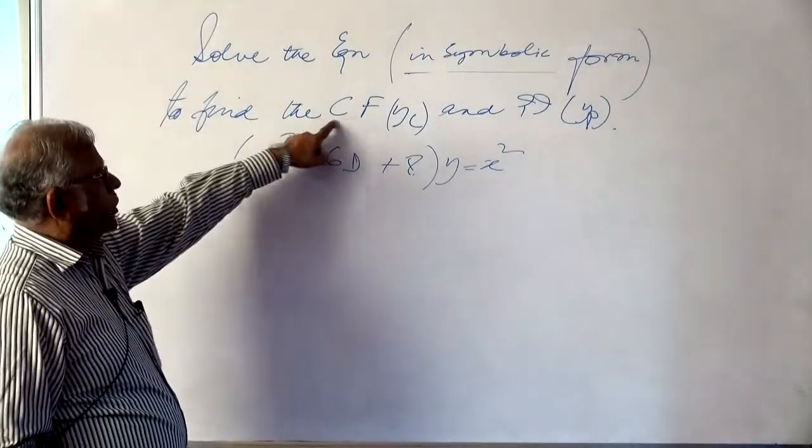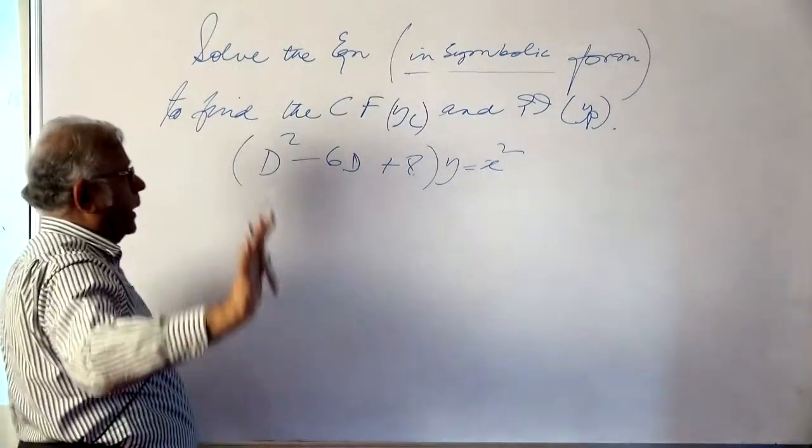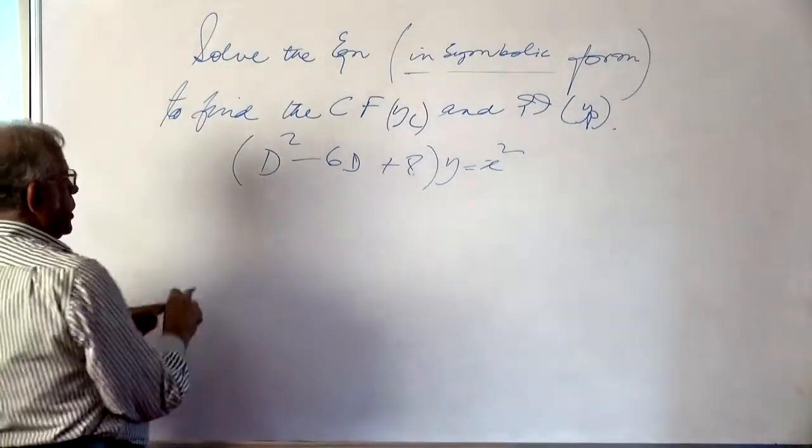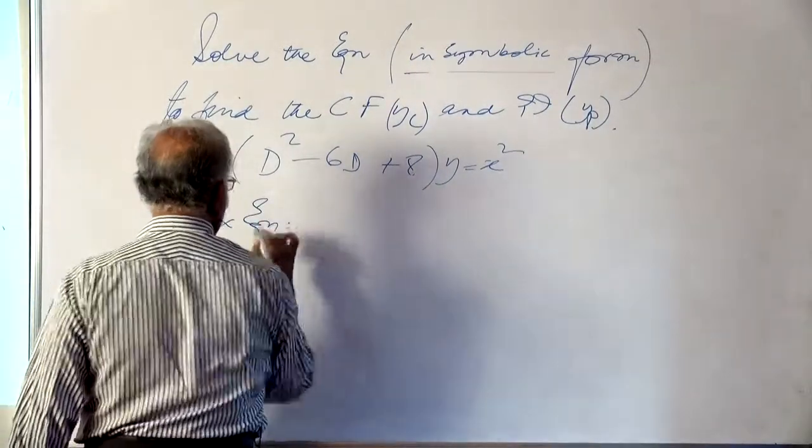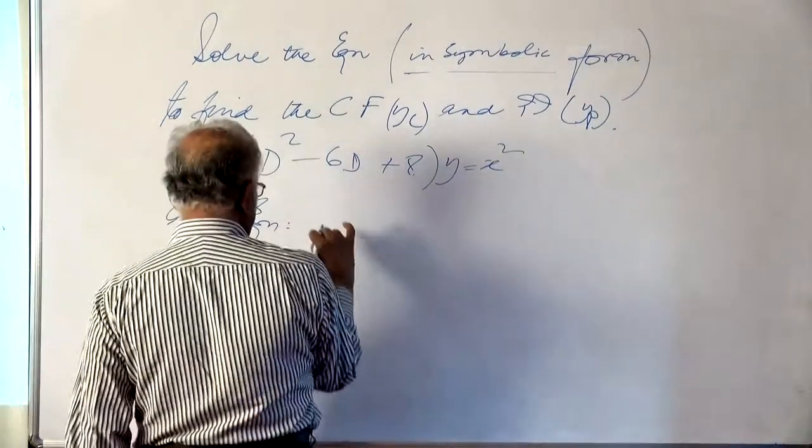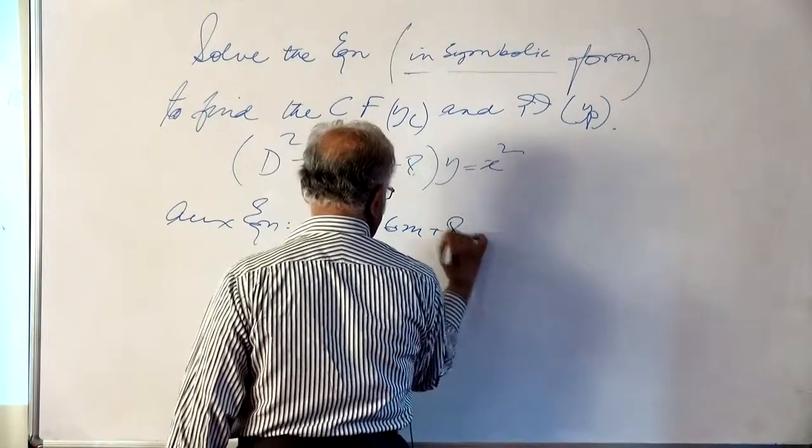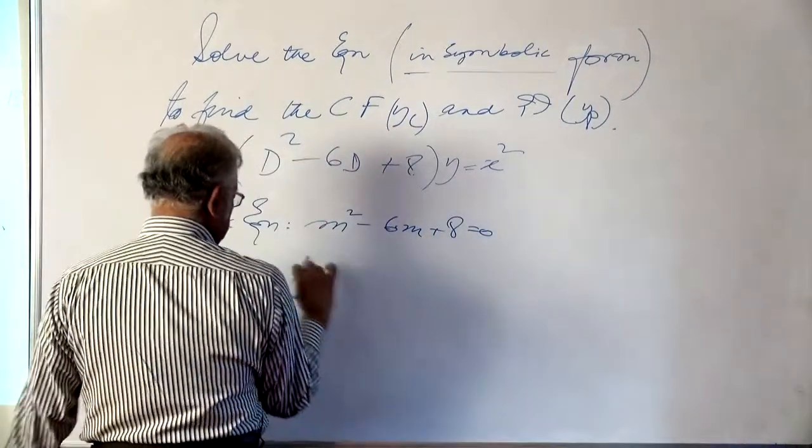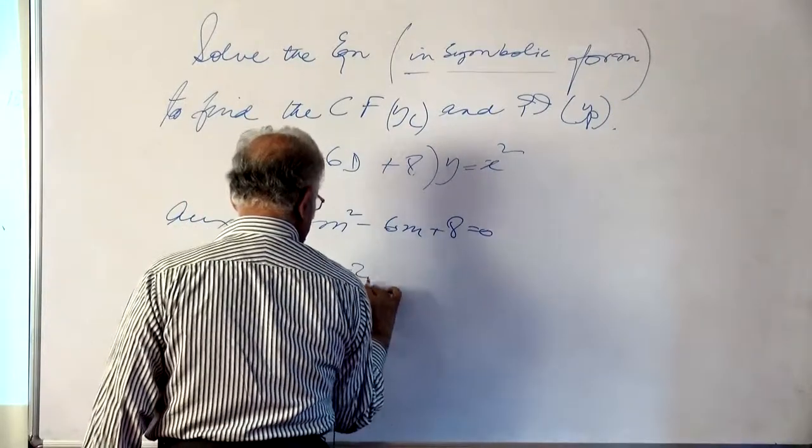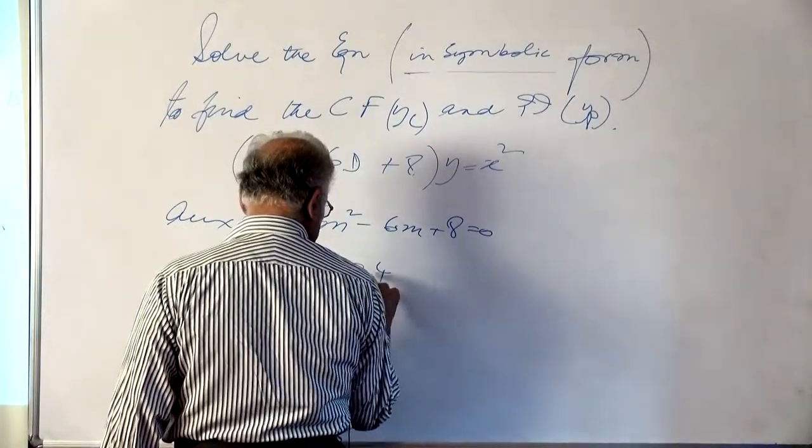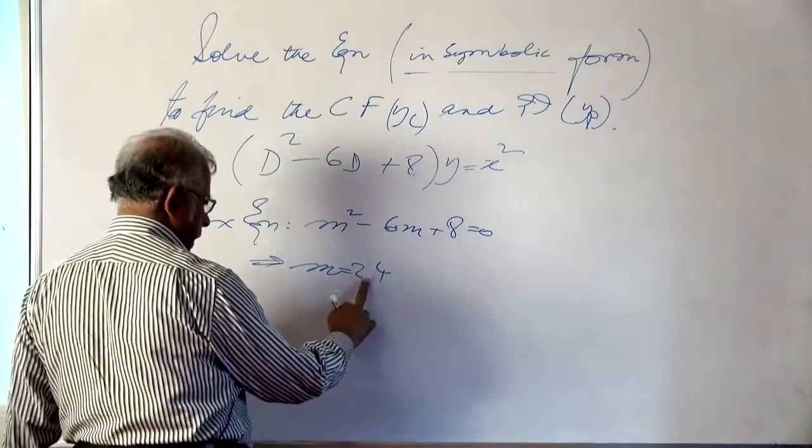For the complementary function we set the right hand side to 0 and find the auxiliary equation. By inspection it is m² - 6m + 8 = 0, which shows two roots: m = 2 and m = 4. These two roots are real and distinct.